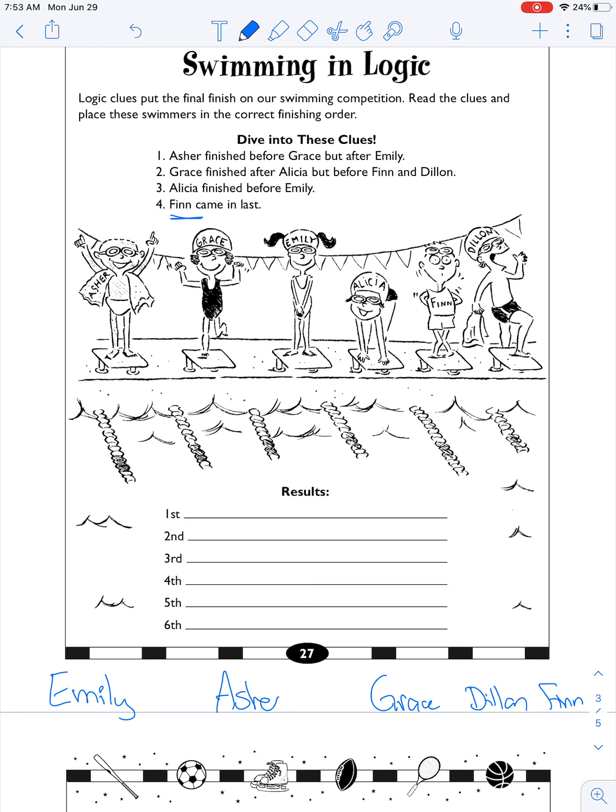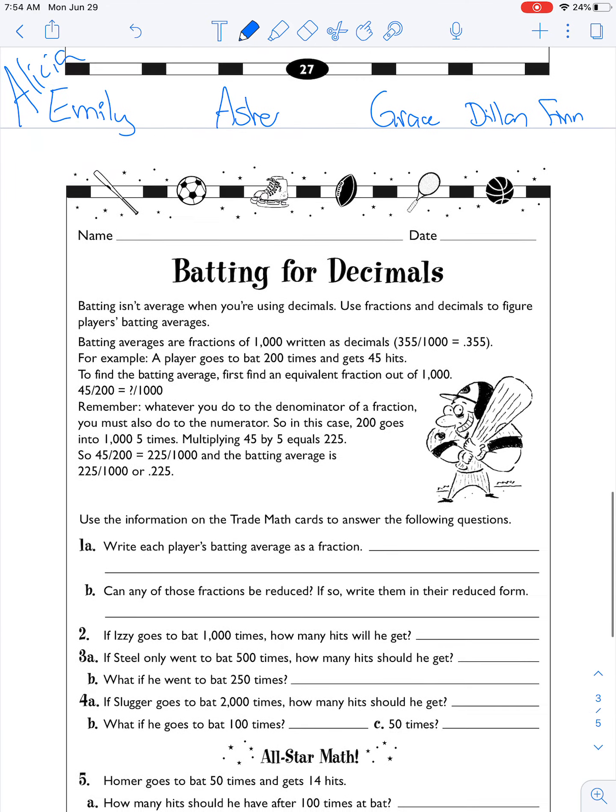Okay, so Alicia has to go here. We still don't have... we think we're good for Asher, we think we're good for Grace, we think we're good for Emily, we think we're good for Alicia, Finn and Dylan. Wait, Grace finished after Alicia. Yeah, okay, Grace finished after Alicia, yeah okay she did. There you go, that's the order. So Alicia, and then second would be Emily, and then Asher, and then Grace, then Dylan, then Finn. Nice, okay, that's kind of a fun one.